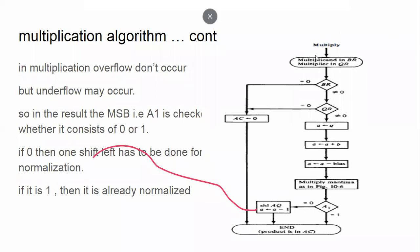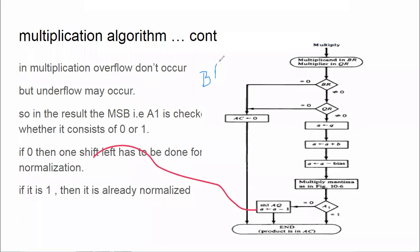In the multiplication algorithm, the multiplicand is in BR and the multiplier is in QR. You check whether BR is equal to zero — if it is zero, the accumulator AC, which holds the intermediate result, will be zero and the process ends. If it is not zero, then you check the value of QR. If QR is also zero, it is over. When both are not zero, you proceed.